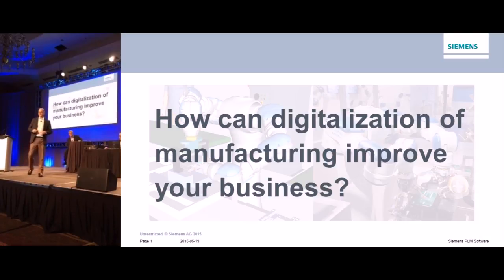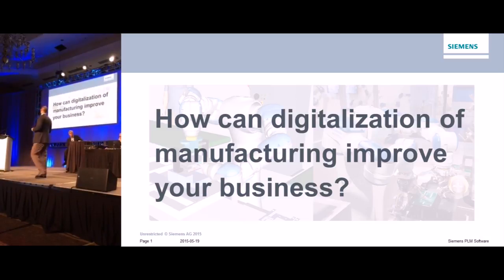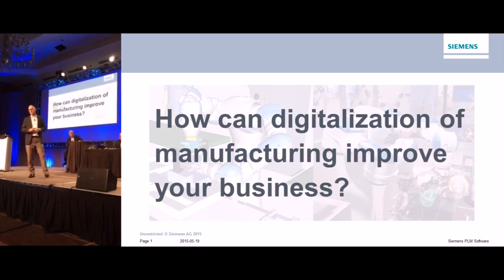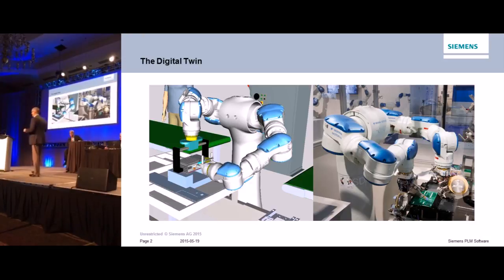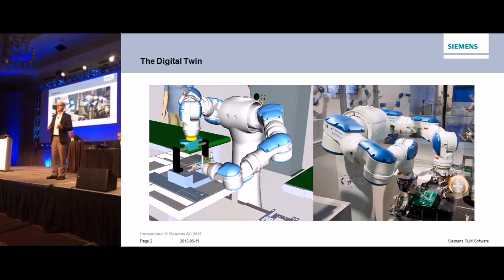Our next demonstration is about manufacturing — more specifically, it's about discovering new and better ways to make products. We've set out to answer this question: how can visualization of manufacturing processes help to improve your business? We'd like to show you how in the context of a real customer case study. Our idea was to build a digital twin of the production system.